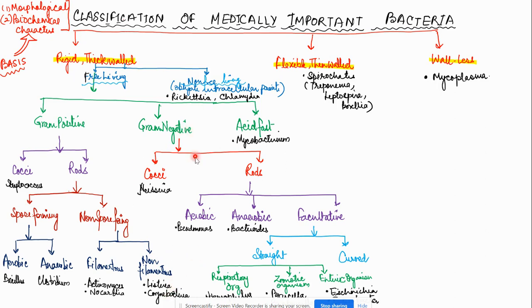Gram-negative bacteria include cocci and rods. Cocci, meaning spherical-shaped, include Neisseria. Rod-shaped gram-negative bacteria are classified as aerobic, anaerobic, or facultative. Aerobic examples are Pseudomonas, anaerobes are Bacteroides.